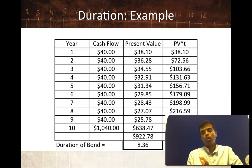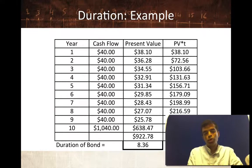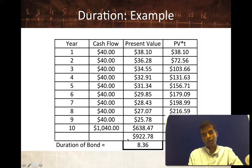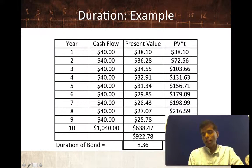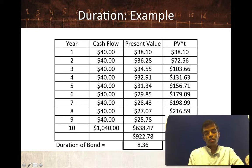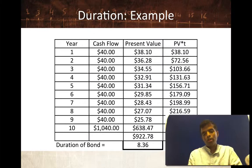This is a 10-year coupon bond with a face value of $1,000 and a market interest rate of 5%. In the second-to-last column, I compute the present value and arrive at $922.78. In the last column, I take the present value in each year and multiply it by when the cash flow comes in — year one gets multiplied by one, year two by two, and so on — keeping a running tab of that number. When I accumulate the very last column, I get $7,714. Dividing 7,714 by 922 gives me 8.36. That's the duration of this bond. The weighted average of when you get those cash flows is 8.36 years.